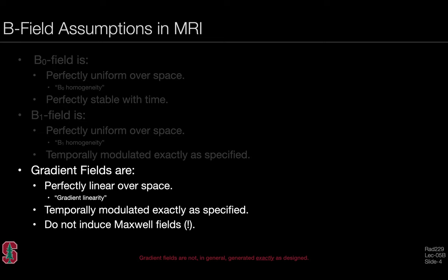This slide was used previously to discuss some of the B-field assumptions in MRI, focusing on those associated with gradient fields. We assume they are perfectly linear over space, which was covered in a previous lecture. We also assume that gradient fields are temporally modulated exactly as specified, and we do not typically include Maxwell fields. This lecture focuses on whether we temporally modulate gradient fields exactly as specified, specifically as a consequence of eddy currents.